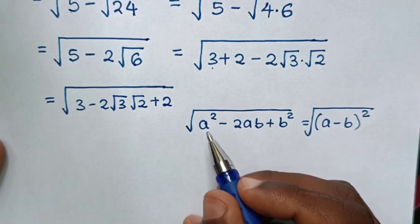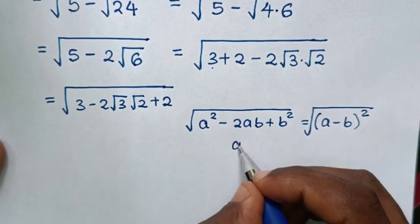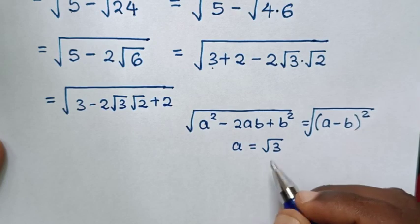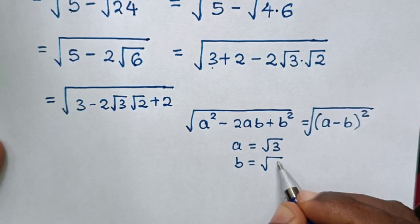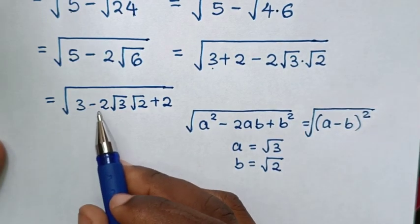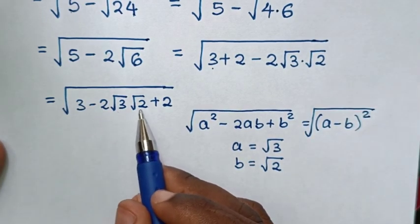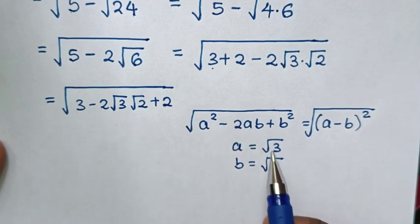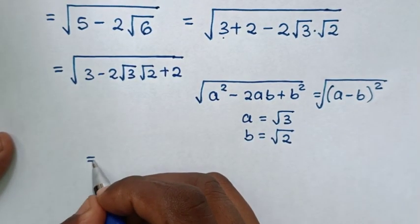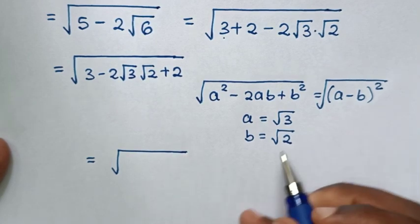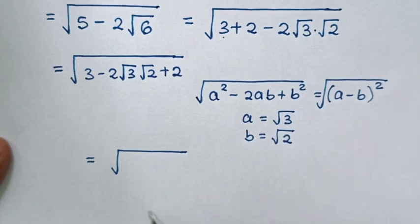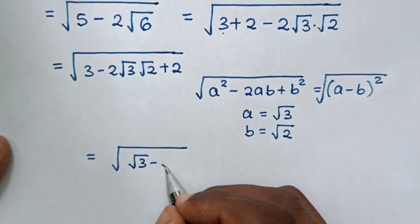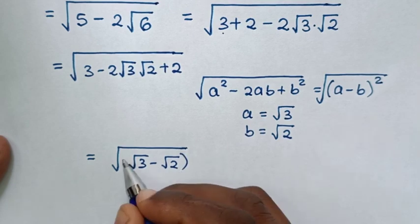When we compare a squared with 3, then a is equal to square root of 3. For the middle term, negative 2 times square root of 3 times square root of 2: negative 2ab means a is square root of 3 and b is square root of 2. Then it will be equal to square root of the quantity square root of 3 minus square root of 2, bracket squared.